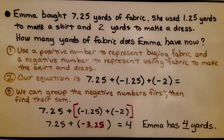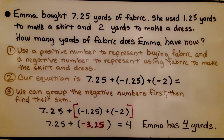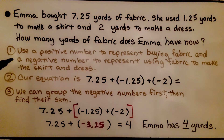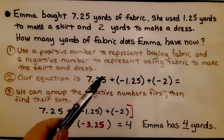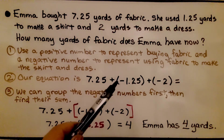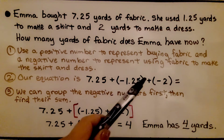Emma bought 7 and 25 hundredths yards of fabric. She used 1 and 25 hundredths yards to make a skirt and 2 yards to make a dress. How many yards of fabric does Emma have now? We use a positive number to represent buying the fabric and a negative number to represent using fabric to make the skirt and the dress. Our equation is positive 7.25 plus negative 1.25 plus negative 2.